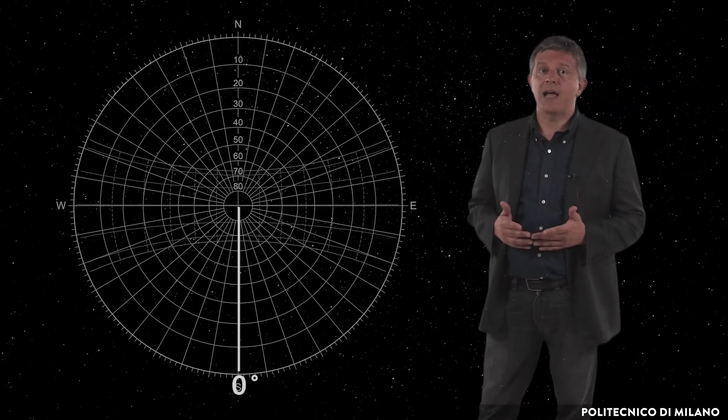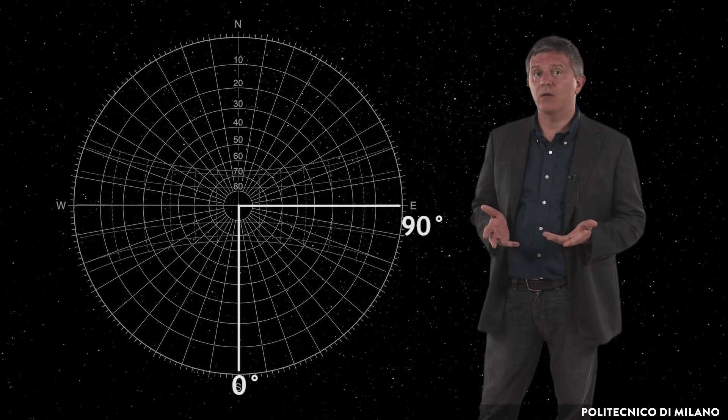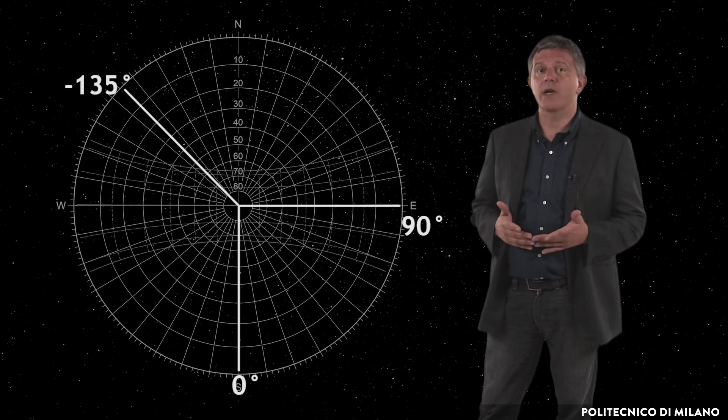For example, south corresponds to alpha equal to zero degrees, east corresponds to alpha equal to 90 degrees and northwest corresponds to alpha equal to minus 135 degrees.